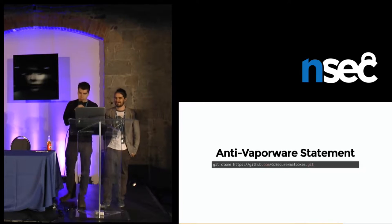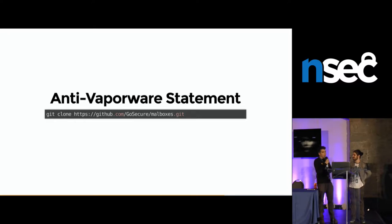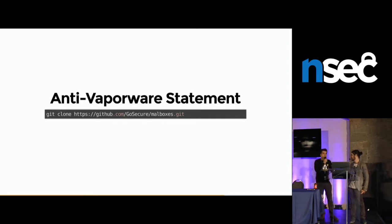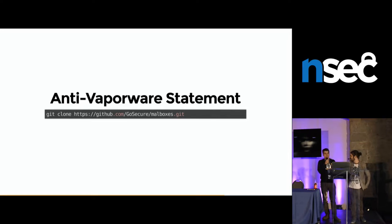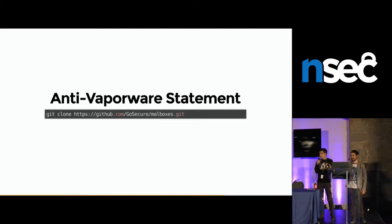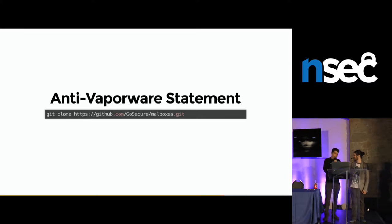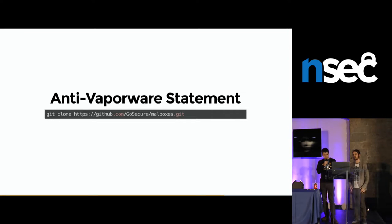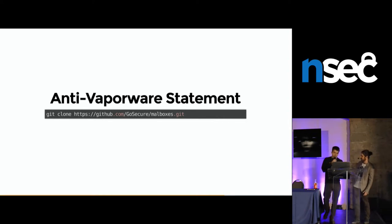I have an anti-vaporware statement to make because I dislike projects discussed at security conferences where you never get to see the code. You need to shame them on Twitter to say 'where is the code?' and they say 'we just need to clean up a few things' — it's been one year. So what we decided to do is we released the tool even before our talk — a few months ago I created the repository and committed all the stuff there. Everyone should be doing this instead of hiding it and waiting to push the publish button. It's on the GoSecure repo.